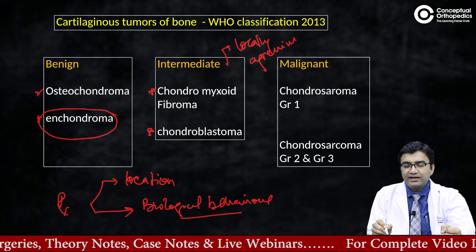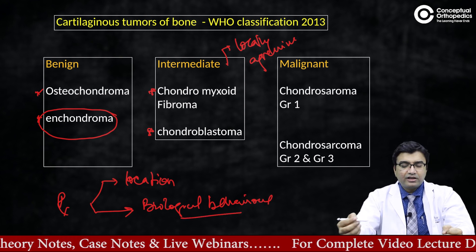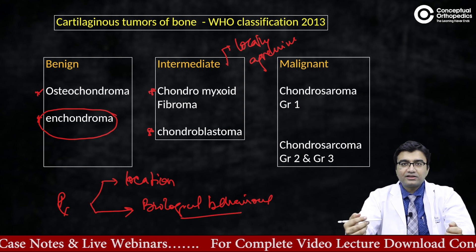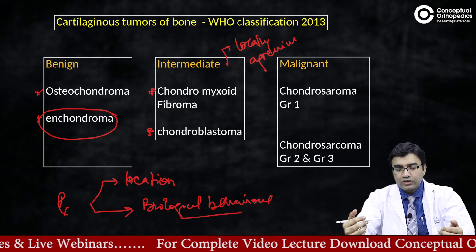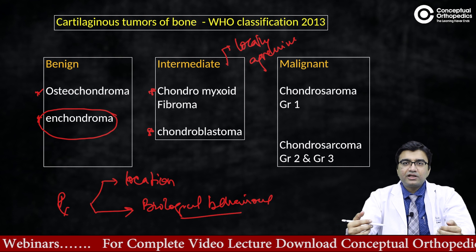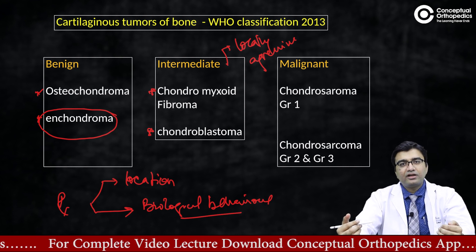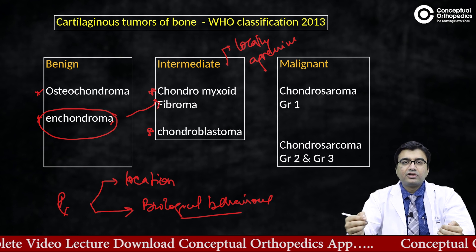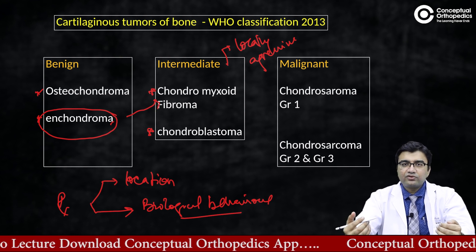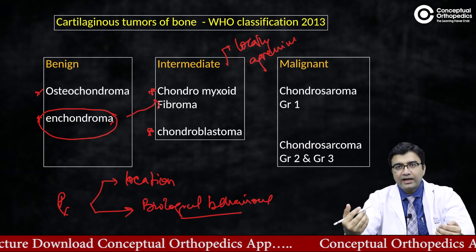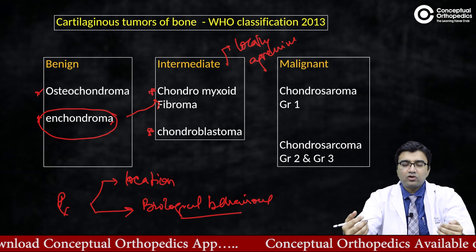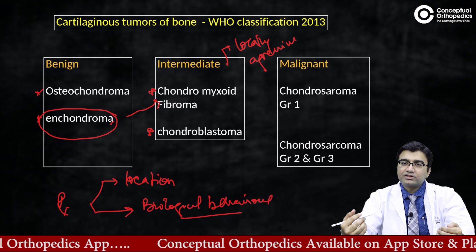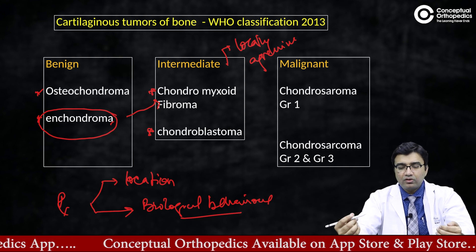What do I mean by that? In general when we talk about enchondroma, we classify it as a benign variety. But many times its behavior may be locally aggressive — destructive to the bone — and it can cause a pathological fracture or present with an impending pathological fracture, pain, or stiffness of the involved bone.